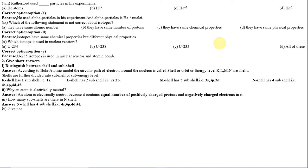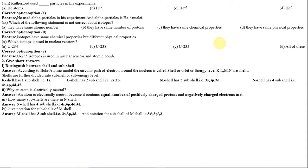Number 4: Give notation for the subshells of the M shell. The M shell has 3 subshells: 3s, 3p, 3d. The notation for subshells of the M shell is 3s2, 3p6, 3d10.